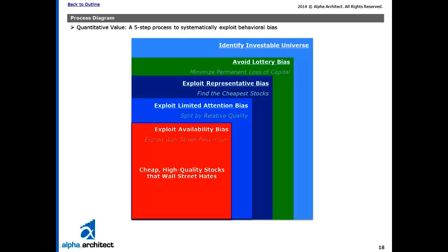Quantitative value effectively buys cheap, high-quality stocks that Wall Street hates. That's the end state of what we're trying to achieve here, but it's not because we just decided at the beginning that that's a good idea. It's because it was built upon through a variety of steps to try to exploit bias problems. So it turns out that these are the stocks that suffer from the most behavioral bias and tend to have the largest limits of arbitrage. And as we discussed in the theory, when we have that combination of bias as well as limited arbitrage, we find mispricing opportunities.